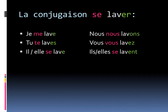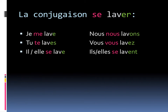Ils ou elles se lavent. The second part of the conjugaison is taking care of the er at the end so that we modify the verb for each person. Here, we follow standard er conjugation rules: we drop our er, we use what's left as our stem — lave — and then we add back the ending: e, es, e, ons, ez, ent.